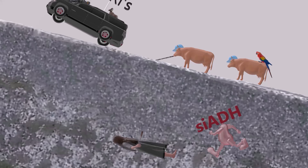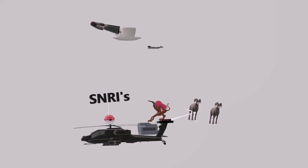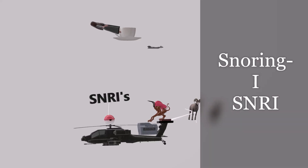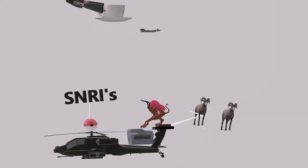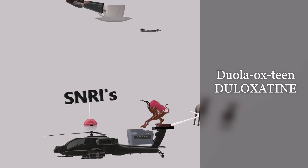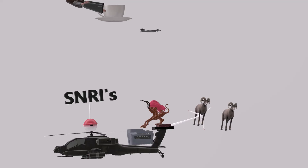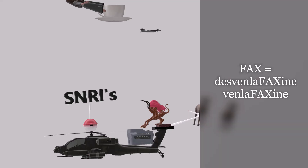Now let's move on to the SNRIs. This group represents the SNRIs — we can imagine a snoring eye on top of this helicopter for SNRIs. On top of the helicopter is a doula ox — a doula ox that's a teen for duloxetine. She is helping a fax machine give birth — the fax machine reminds us of the faxines: venlafaxine and desvenlafaxine, with desvenlafaxine being an active metabolite of venlafaxine.